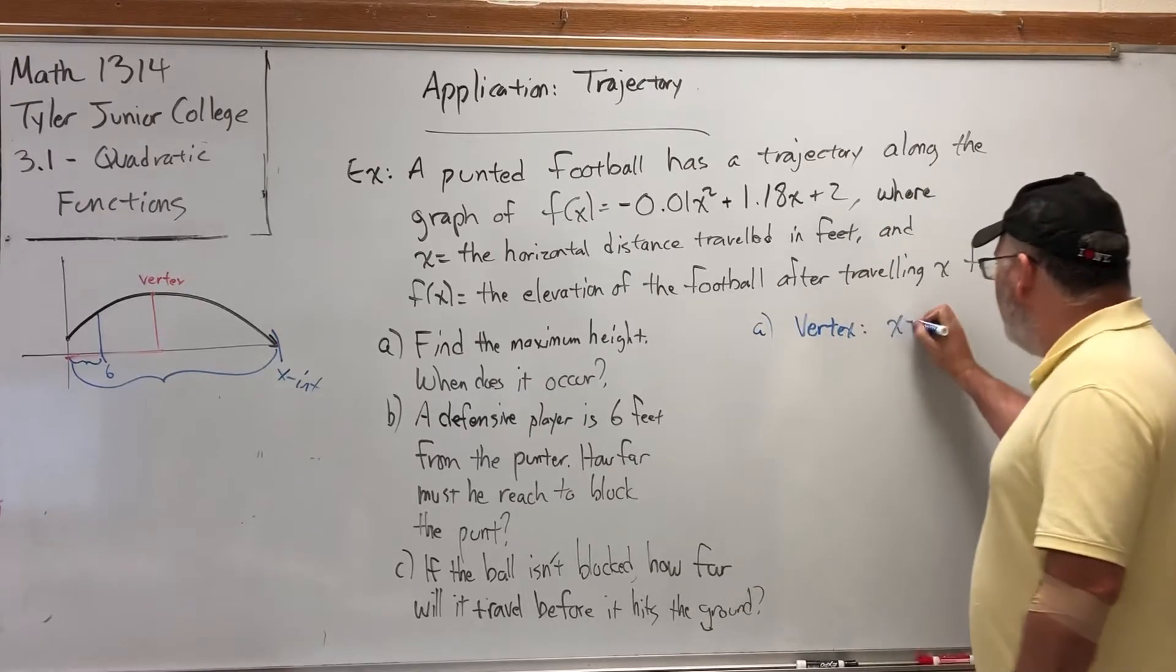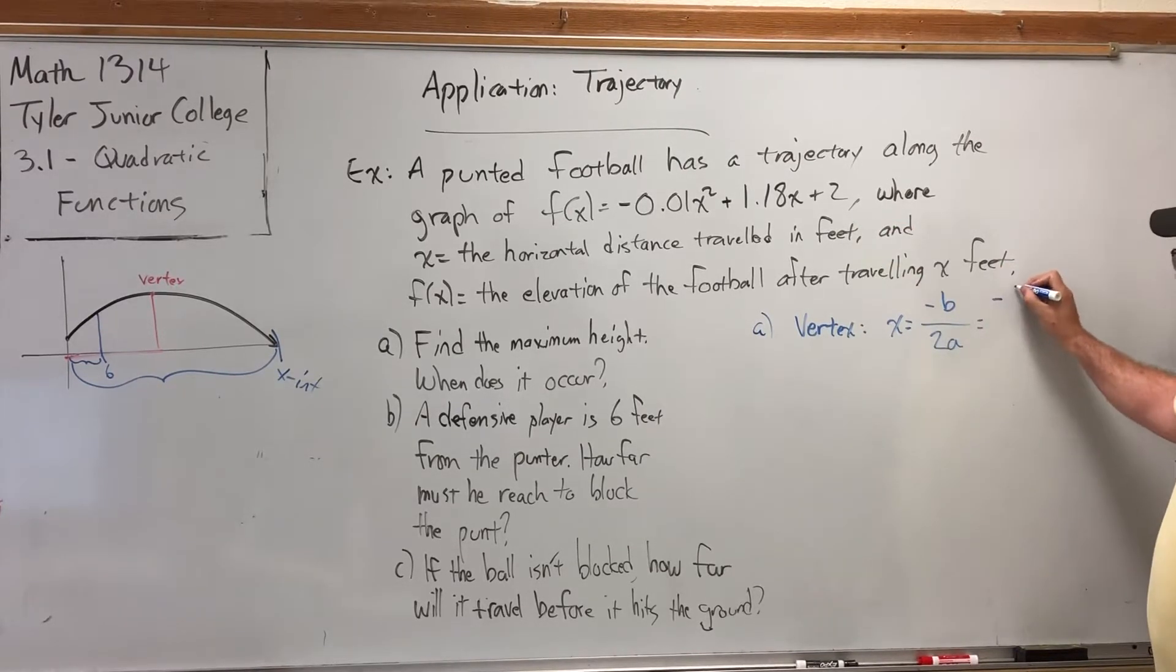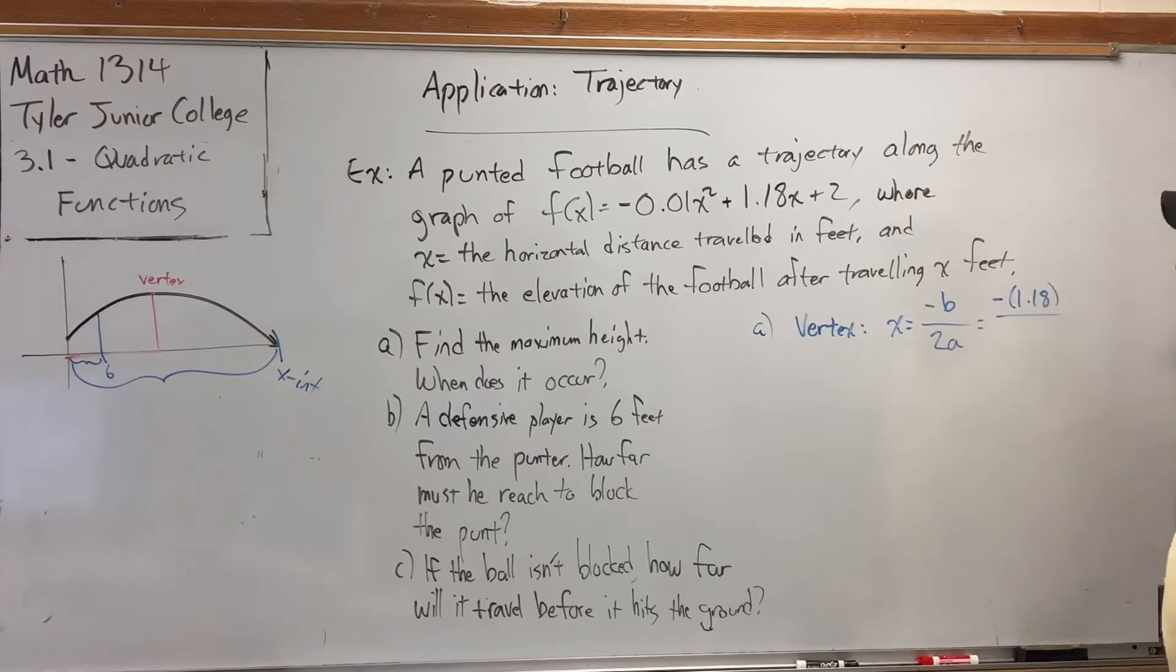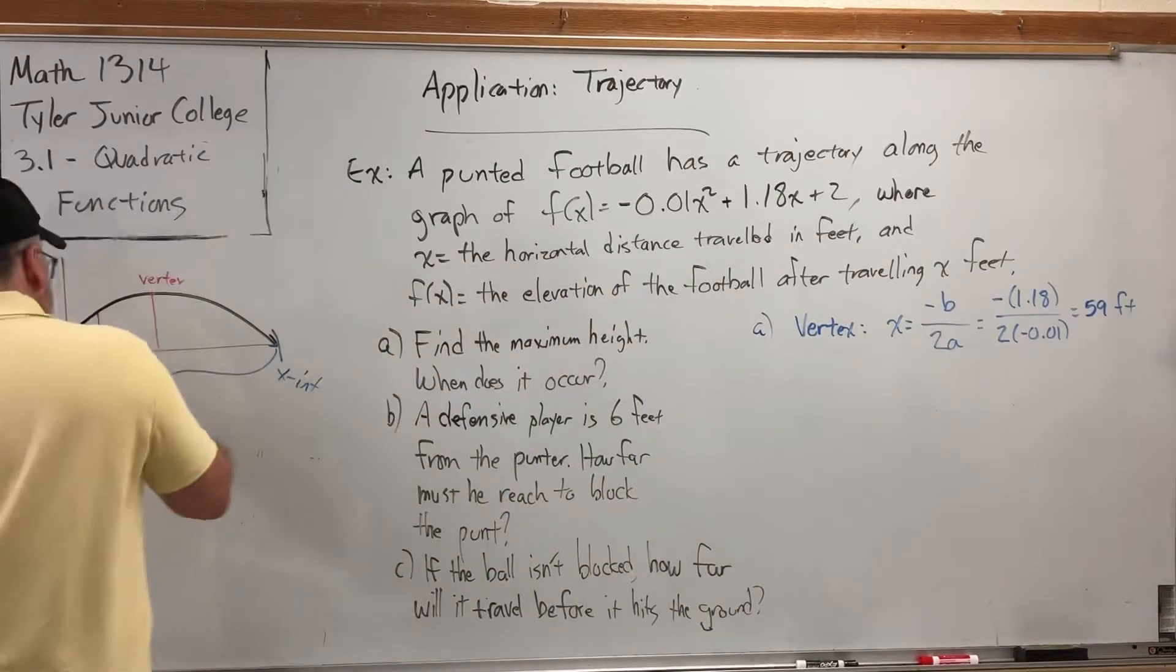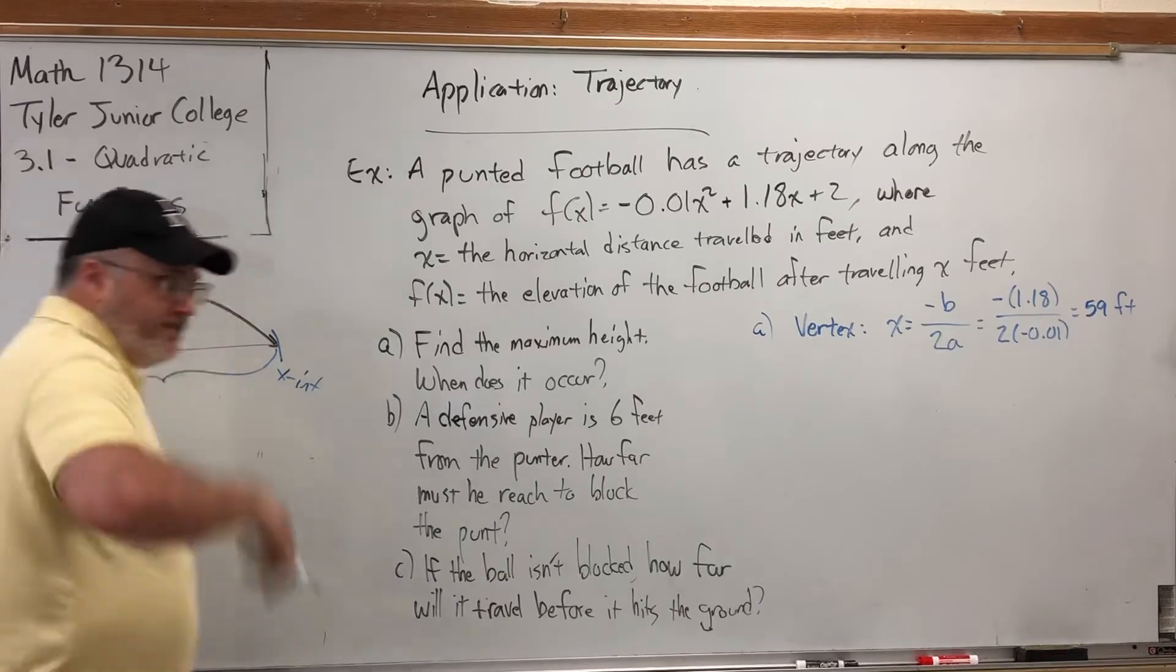Well, that's just a formula. So, x = -b/(2a). B in this problem is 1.18. So, -1.18. The a is -0.01. So, 2 times -0.01. And if you'll just allow me to, I'll just work this out real quick in my head. Or I'll do it verbally. The negatives cancel. This gives me 0.02. If I do this decimal, it's going to be 59. It should be exactly 59 feet. But that doesn't answer the whole question. That answers when it occurs. That tells me that after the ball is traveling 59 feet, it has reached the apex of its trajectory.